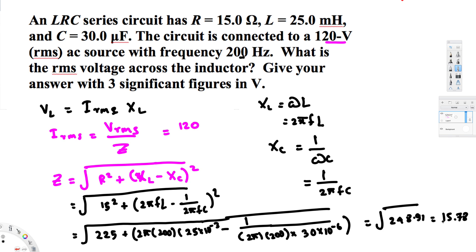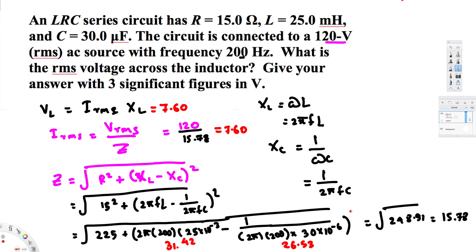Now we use this impedance to find Irms. We divide 120 by 15.78, which gives Irms equal to 7.60 amperes. Now we use the equation VL equals Irms times XL. Irms is 7.60, and XL — if you simplify 2πfL — comes out to 31.42 ohms.